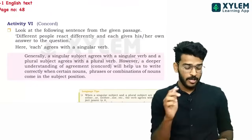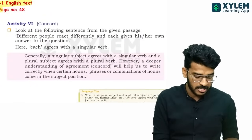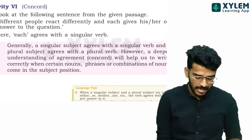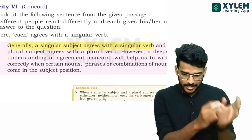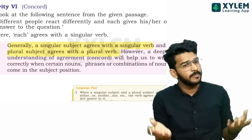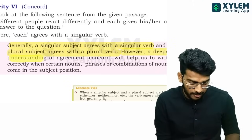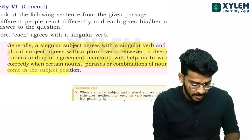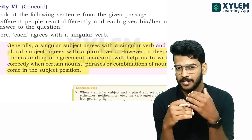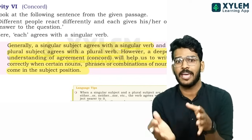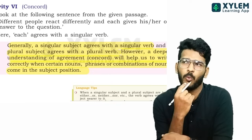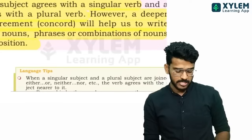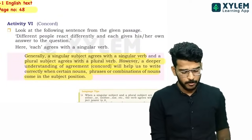The full details are in the textbook on page 48. Generally, a singular subject agrees with a singular verb, and a plural subject agrees with a plural verb. However, a deeper understanding of agreement and concord will help you write correctly when certain noun phrases or combinations of nouns come in the subject position.